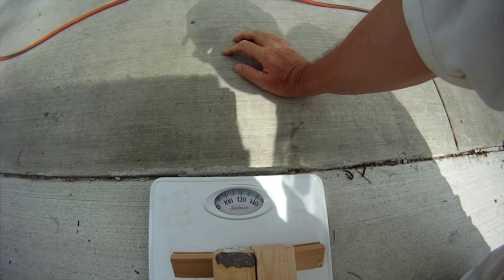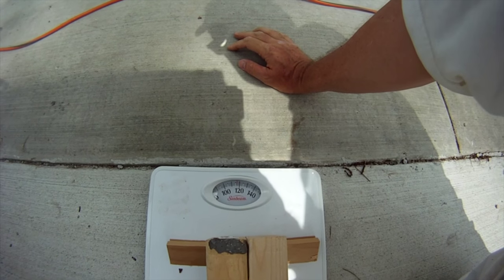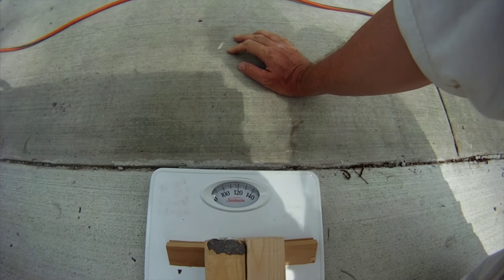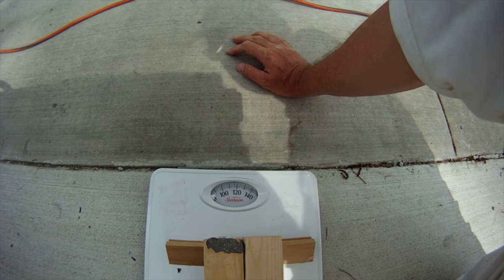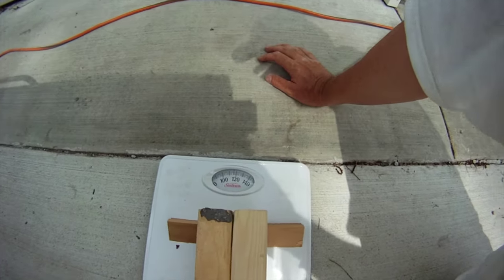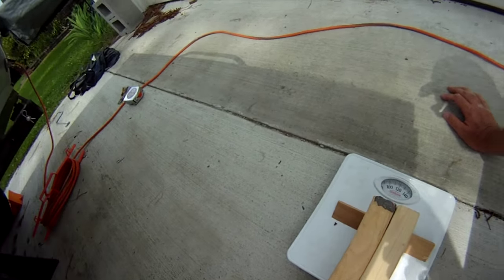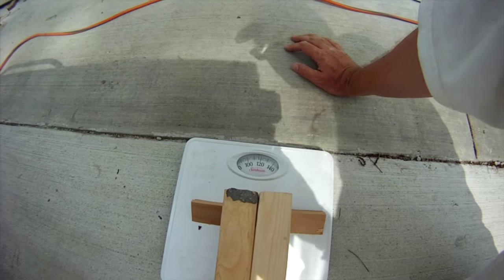So there we are. That is reading 116. Alright, so that's what this is on this side, and I will do the other side as well, do it just exactly the same as this. And then I will also do the tongue and I'll show you that part.